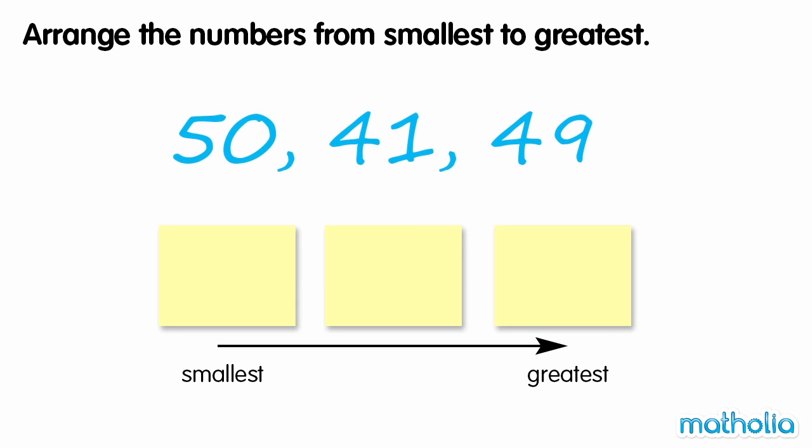Arrange the numbers from smallest to greatest. Let's start by comparing the digits in the tens place. Five tens is greater than four tens. So fifty is the greatest number.